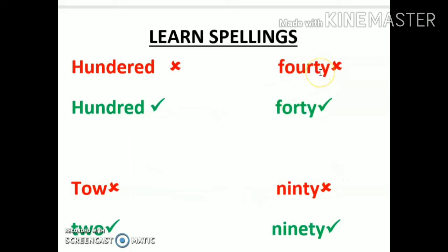Same with the case of forty, ninety, and two. In forty, the correct spelling is F-O-R-T-Y. In two, the correct spelling is T-W-O. In ninety, the correct spelling is N-I-N-E-T-Y.